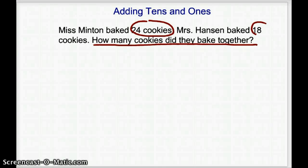I'm going to circle important information, which is 24 cookies and 18 cookies. I do not have any extra information that I need to cross out, but because I know they asked how many did they bake together, I know I'm going to add.